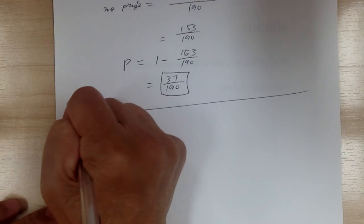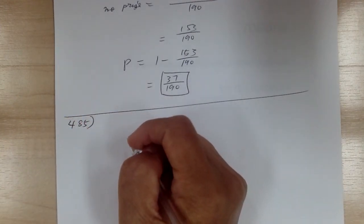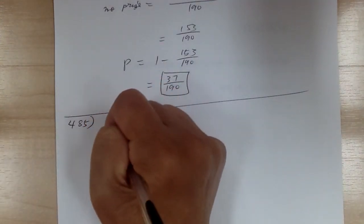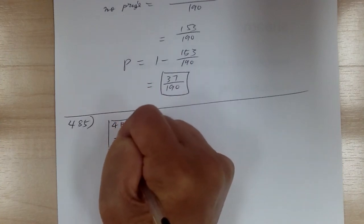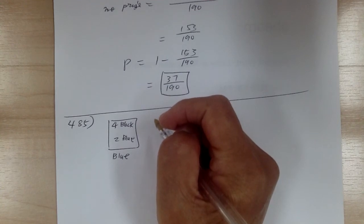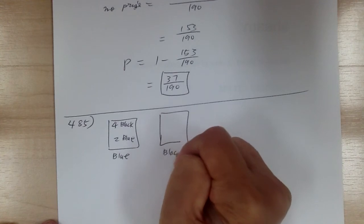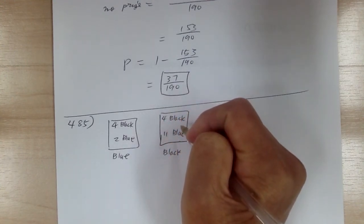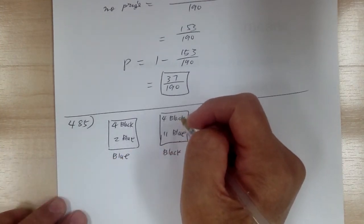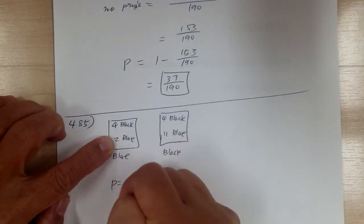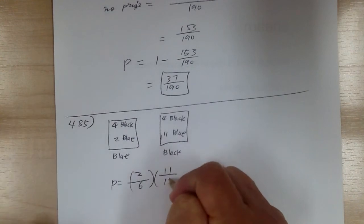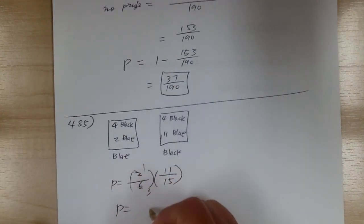Let's go to 485. You have a blue urn containing 4 black and 2 blue marbles. And a black urn containing 4 black and 11 blue. One marble is drawn at random from each of the two urns. What's the probability that both marbles are blue? Since they're independent, you can just multiply. Blue from the first urn is 2 out of 6, and blue from the second urn is 11 out of 15. When you simplify, you get 11 out of 45.